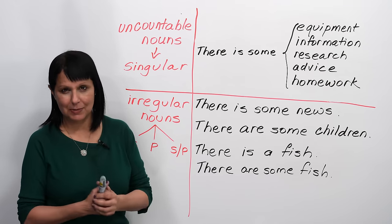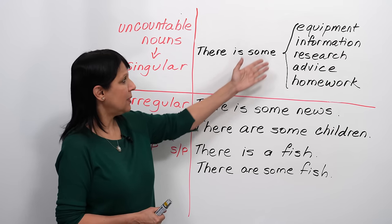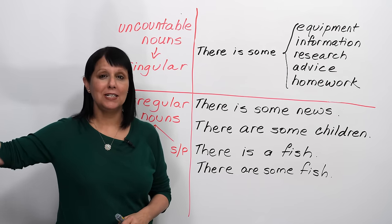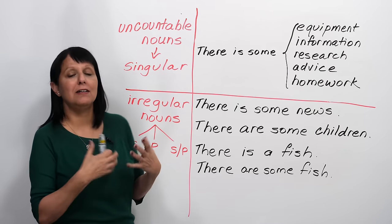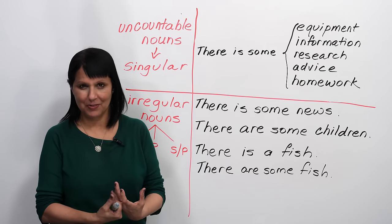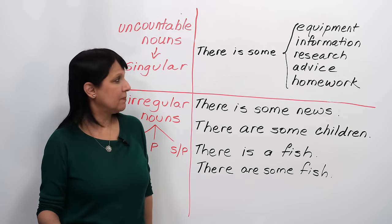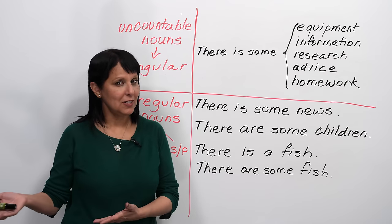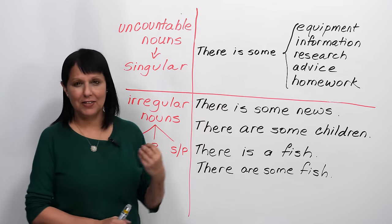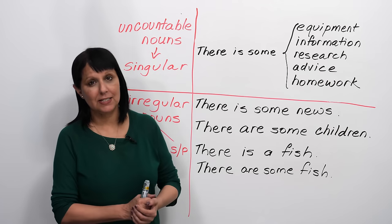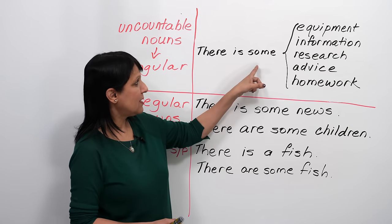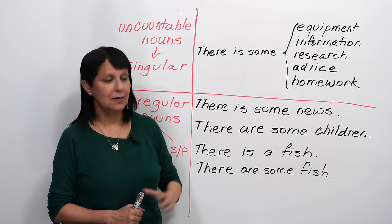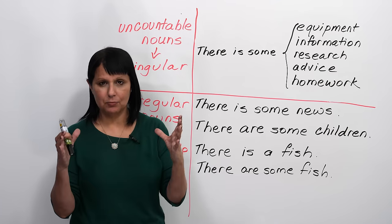For example, we say 'there is some equipment.' If it were countable, we would say 'there are some computers,' because computers we can count. But 'equipment' is considered an uncountable noun, so it's always singular. Similarly: 'There is some information,' 'there is some research,' 'there is some advice that you should take,' 'there is some homework you need to finish.' Even if you turn these sentences around, they remain singular — 'some equipment is in the factory,' 'some information is available,' 'some research has been done.'